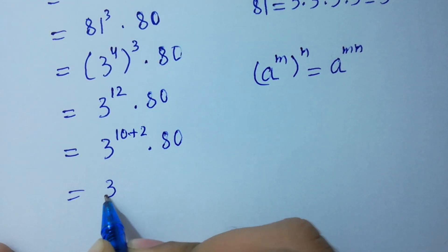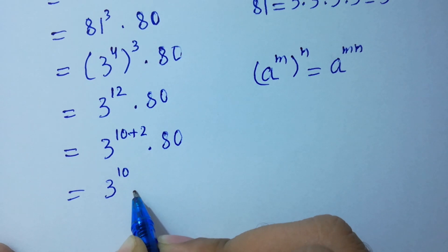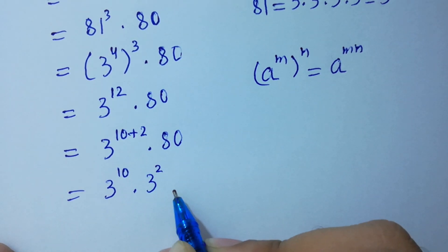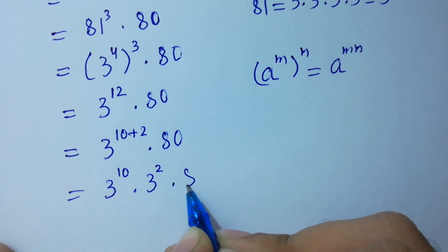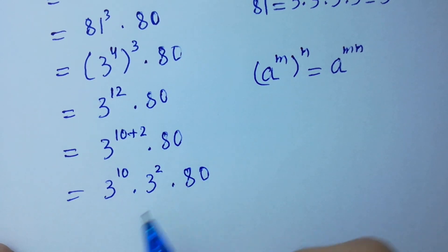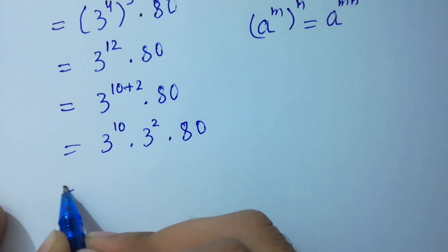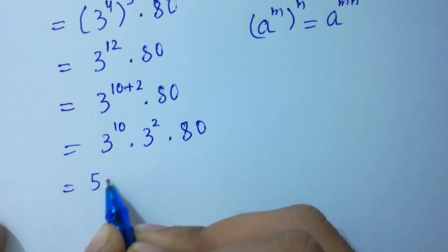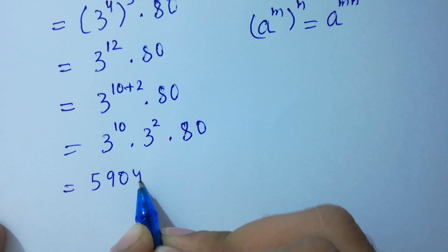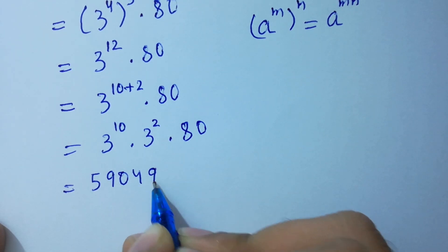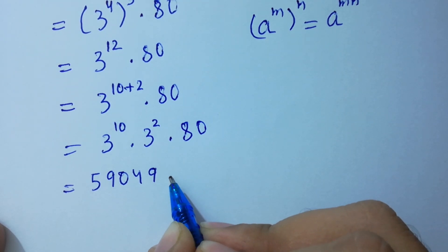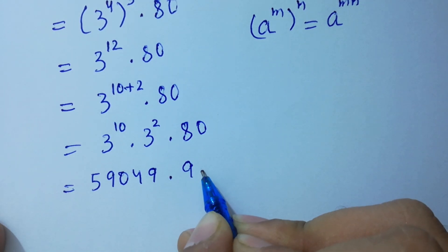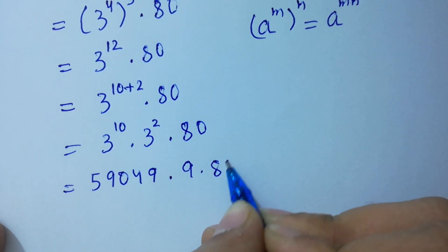We have 3 to the power 10 times 3 squared times 80. Now, 3 to the power 10 equals 59049, so this becomes 59049 times 9 times 80.